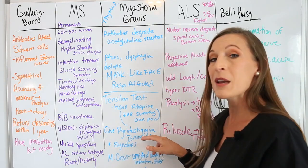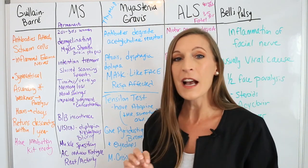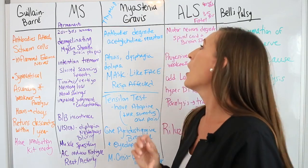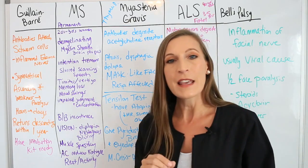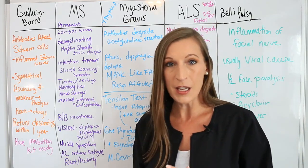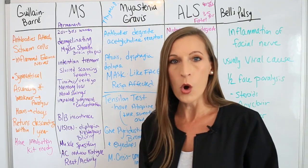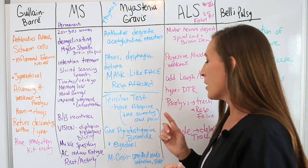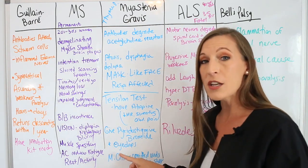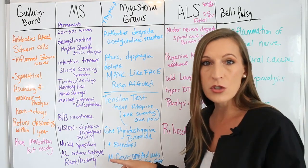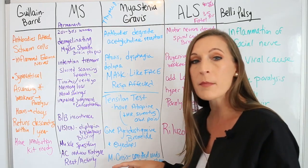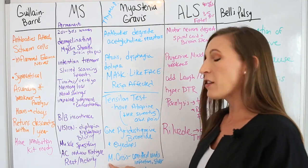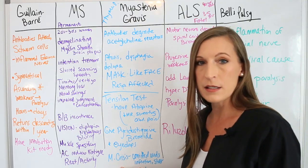The medication is pyridostigmine bromide, the anticholinesterase drug given to myasthenia gravis patients. They need to take it every day at the same time, because if they don't it will disrupt their acetylcholine levels and they will have symptoms. Eye drops are also given because anticholinergic drugs make the eyes dry — and everything else dry too.